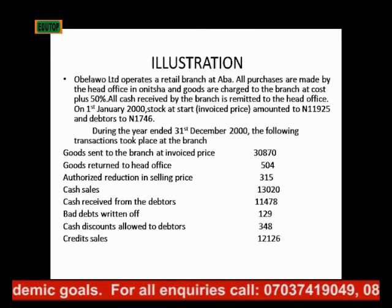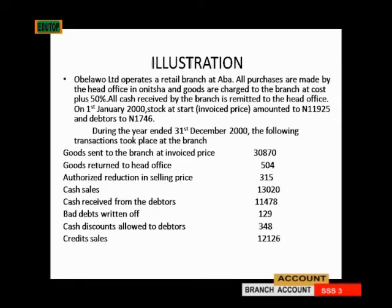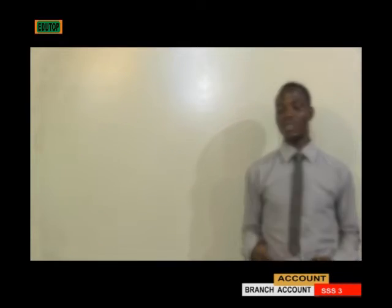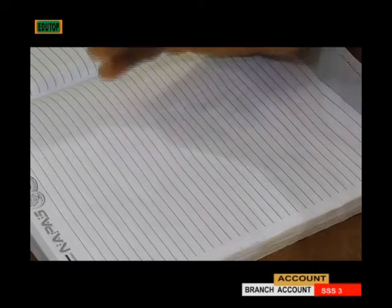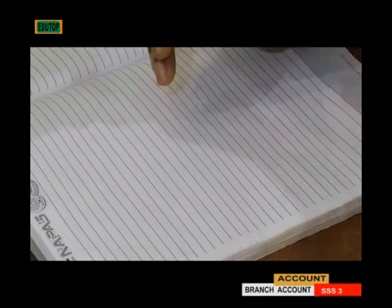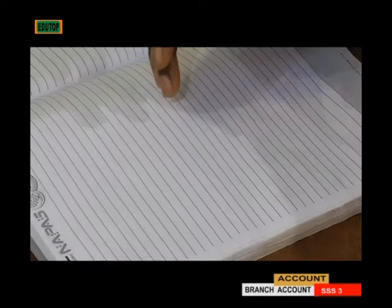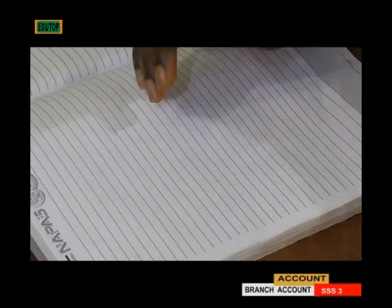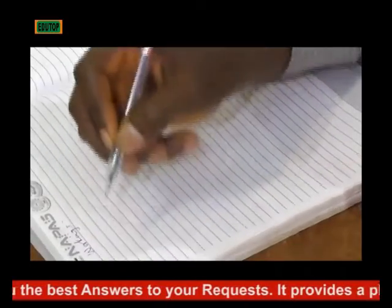During the year to 31st December 2000, goods invoiced to the branch amounted to 462. We are asked to prepare the necessary accounts using the cost method. Now, since this is the cost price method, there are some goods in the information given at invoice price that we need to convert to cost price.